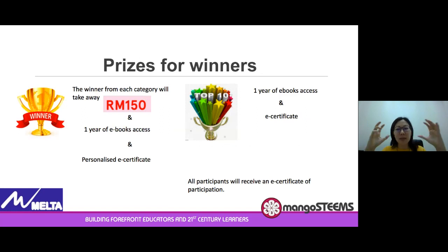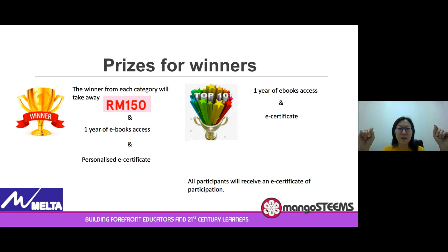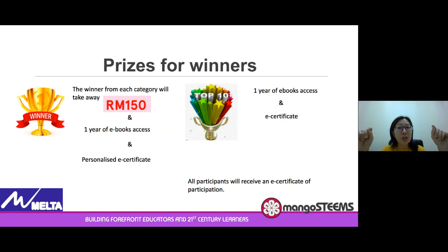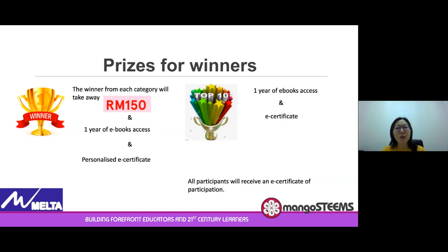Here is the grand thing you are looking forward to — the prizes for winners. For each category, there will be one winner. The winner will take away 150 in cold hard cash. On top of that, you will get one year e-book access — that's 12 months of reading 3,000 story books. And you will get a personalized e-certificate for your achievement. There are no losers — we also have the top 10, who will receive 12 months of access to Learning A to Z books and an e-certificate. And all participants will receive an e-certificate for their participation.